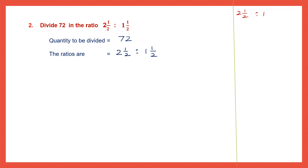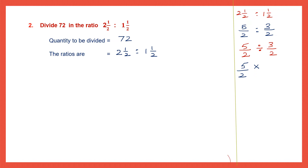Whenever we have fractions as ratios, let's reduce them to the lowest term. Convert: 2 and 1/2 becomes 5/2, and 1 and 1/2 becomes 3/2. Since this is a ratio, it is also division: 5/2 divided by 3/2. For division of fractions, change division to multiplication and write the reciprocal of 3/2, which is 2/3. Cancel the 2s and we get 5/3. If we change that to a ratio, it is 5 is to 3.